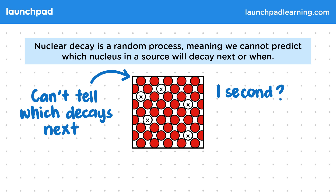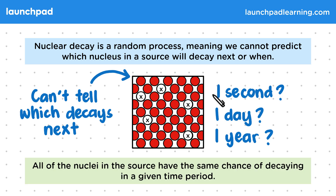It could be one second, it could be one day, it could be one year. So this also means we can't exactly predict how many nuclei decay in a certain time period. All of the nuclei in the source have the same chance of decaying in a given time period.